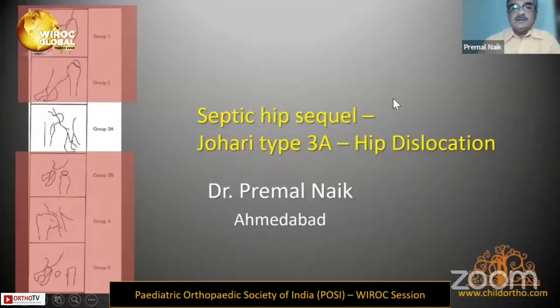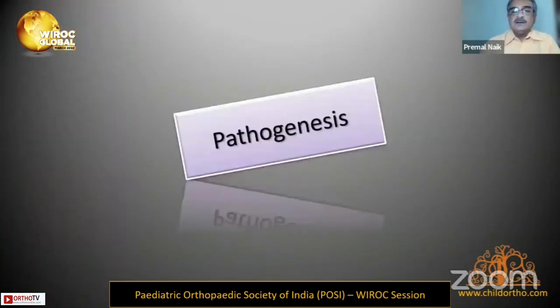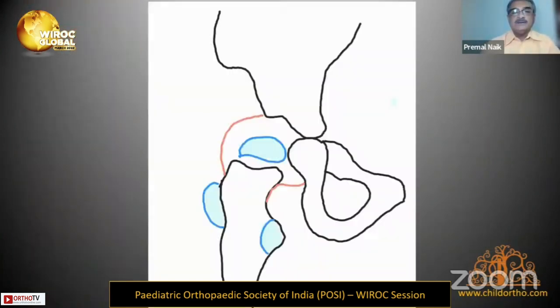I'll move to the third A-type where there's a dislocation with the presence of the femoral head. As my last talk, I'll briefly go through how this happens. This is a normal hip.